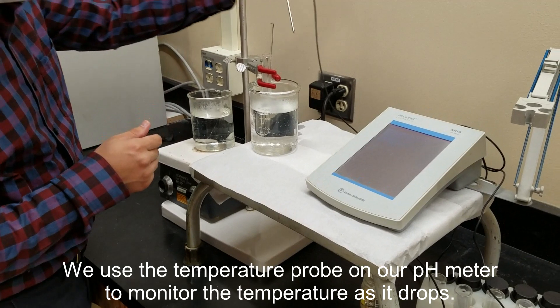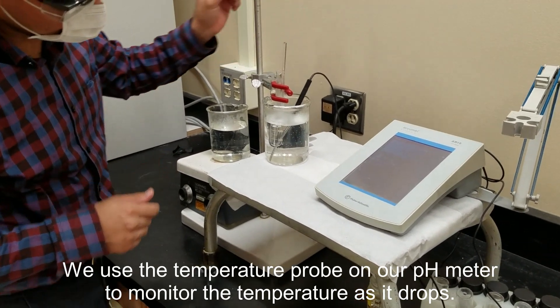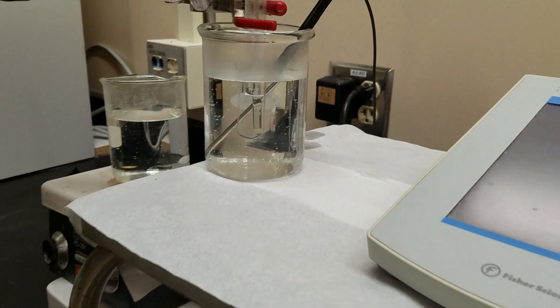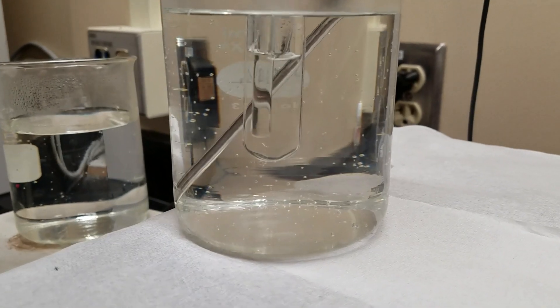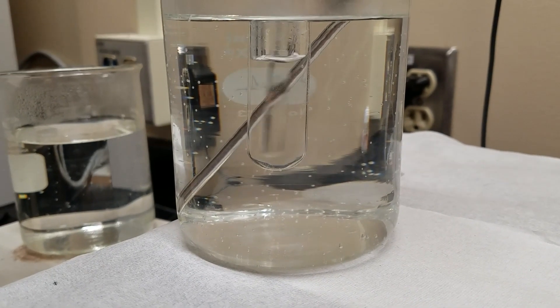We'll be using the temperature probe from our pH meters to monitor the temperature as it falls. We'll gently stir our solution and keep an eye on it to watch for precipitate.